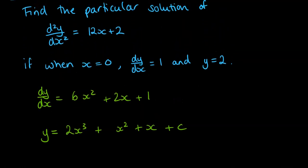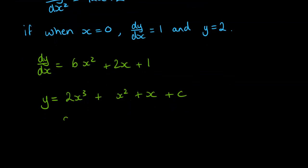So we've got the information here. When x is 0, y is 2. So when we do 2 times 0³ + 0² + 0 + c, we get the answer of 2. So therefore this c has to be equal to 2.